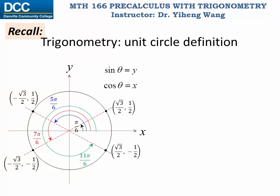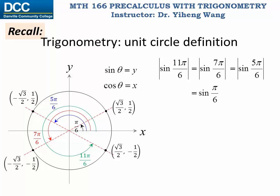Notice that all the y-coordinates have the same absolute value, one half, and all the x-coordinates have the same absolute value, square root of 3 over 2. This means the absolute value of sine(11π/6) equals the absolute value of sine(7π/6) equals the absolute value of sine(5π/6), and that equals sine(π/6), which is always positive because π/6 is an acute angle — its terminal side is in the first quadrant — giving positive one half.